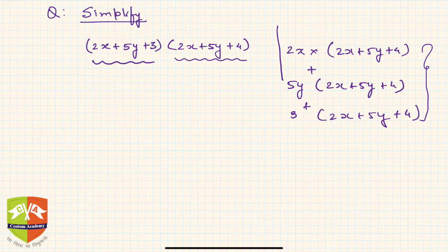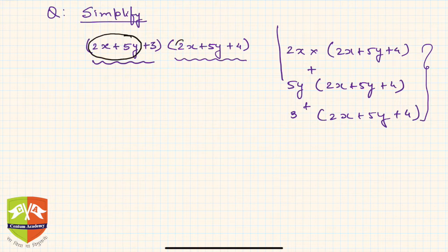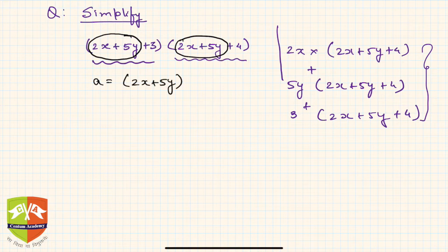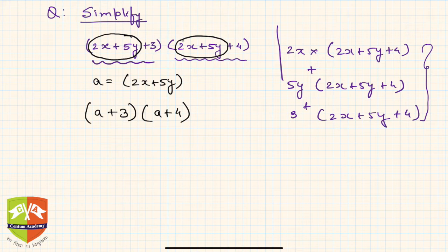Can we simplify this process and reduce our efforts? Mathematics is always about finding trends and patterns. If you see the pattern here, there is 2x+5y in both terms. So let a be equal to 2x+5y. Now the two factors become a+3 and a+4.